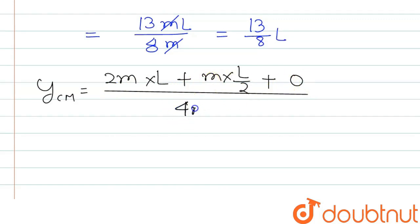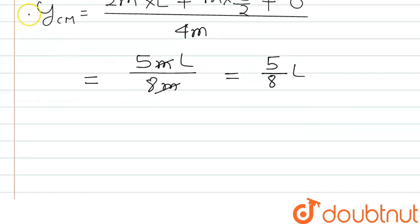Further if we solve this, this will be 5ML by 8M, and here M and M both will be cancelled out, so this will be 5 by 8 into L. Now we have to write in the form of position vector.